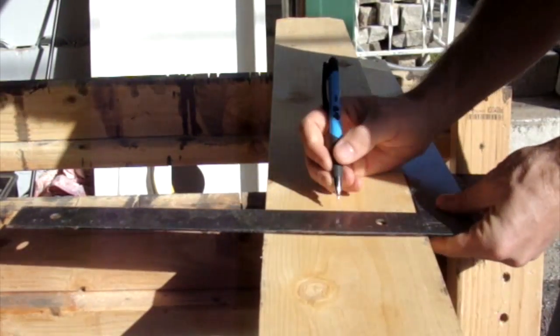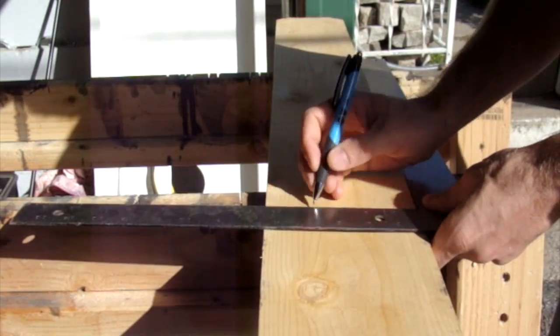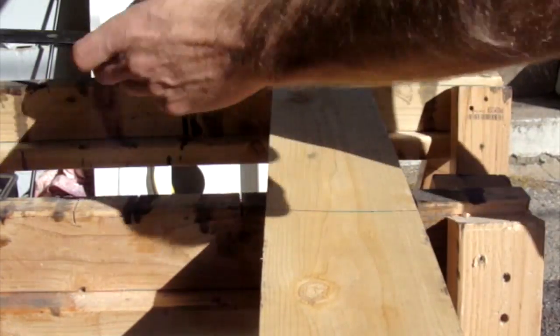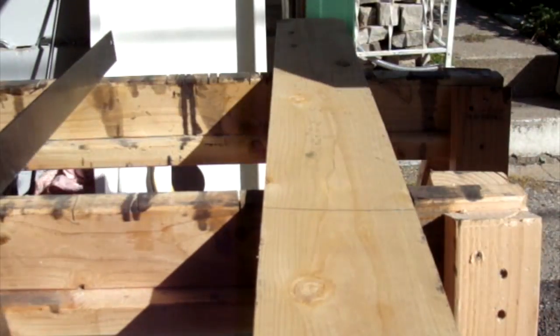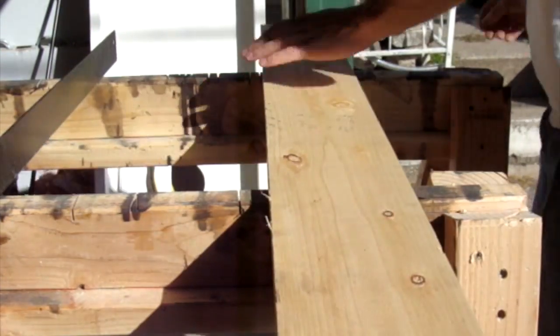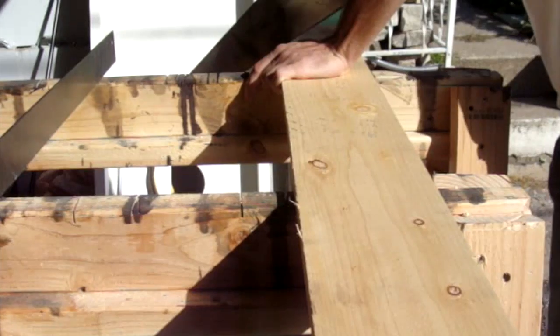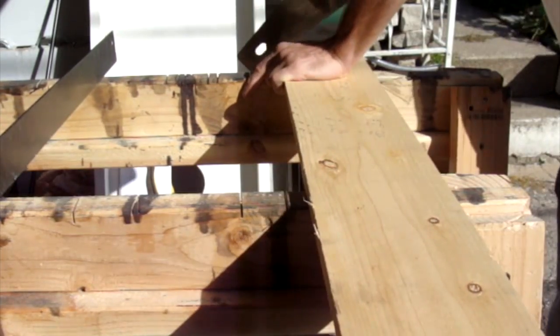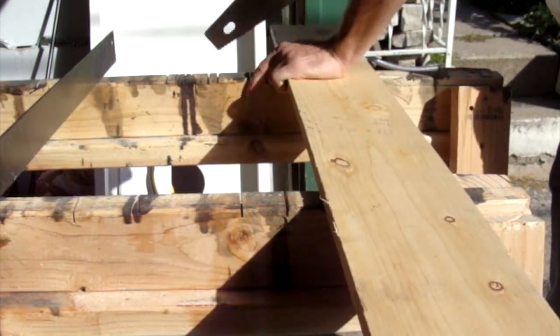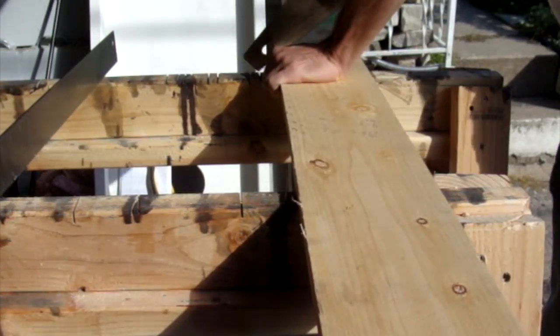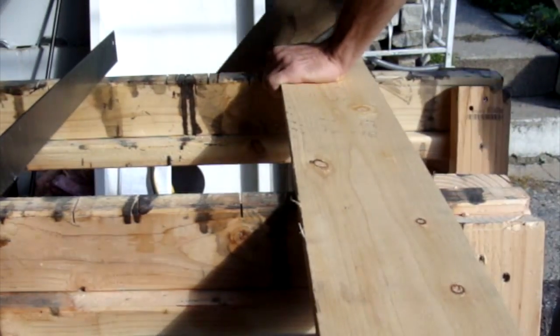You always measure from the edge twice, and then you can draw a line through those two points. When you're using your handsaw, start off slowly with a pulling back motion until you get a bit of a groove. Then you can hold it securely and go back and forth.